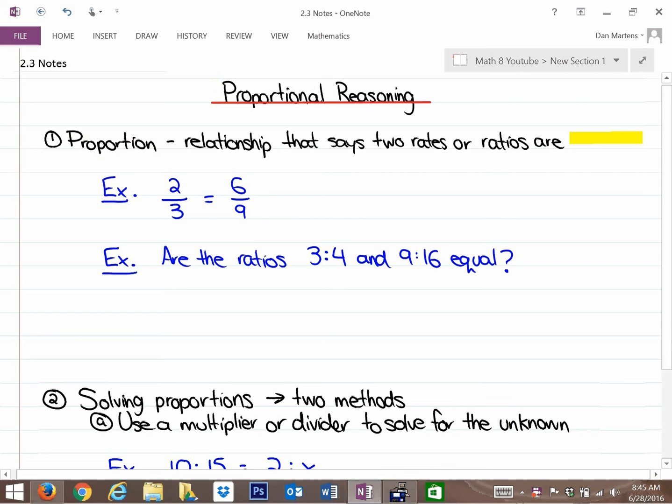What a proportion is, is a relationship that says two rates or ratios are equal to each other. So if you look at the first example here, what you'll notice is two-thirds is equivalent to six-ninths. And here's the proportional reasoning for that, and they are equivalent, and this is a proportion, that two-thirds is equivalent to six-ninths.